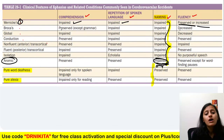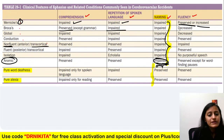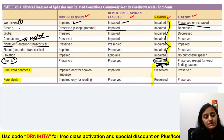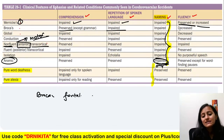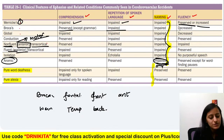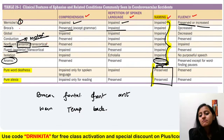Let's review the table. Wernicke's aphasia: repetition affected, comprehension affected, fluency preserved or increased, neologisms seen. In Broca's: comprehension is preserved, repetition is impaired. Non-fluent transcortical aphasia is motor transcortical, also called anterior transcortical — because Broca's is in the frontal, anterior region. Wernicke's is temporal, posterior — so fluent transcortical is posterior transcortical.